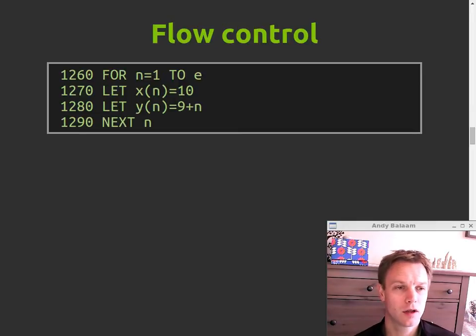Flow control well this is a for loop which lets the variable N change from one up to E inclusive I think. And the body of this for loop is those two LET statements. Notice that they're not indented in any way or anything and there's no indication that this is a flow control construct. And then to end the loop you say NEXT N.